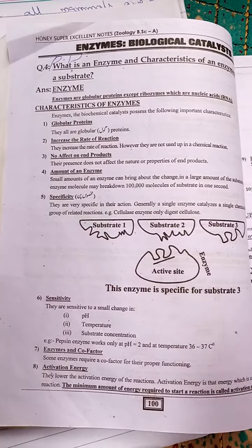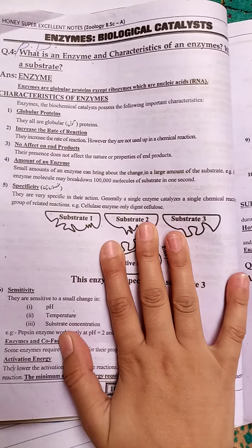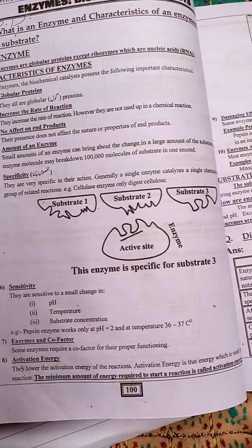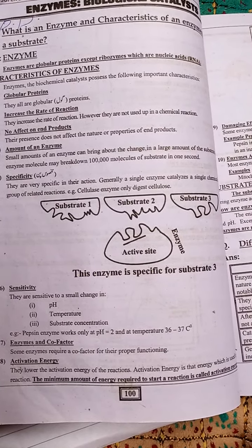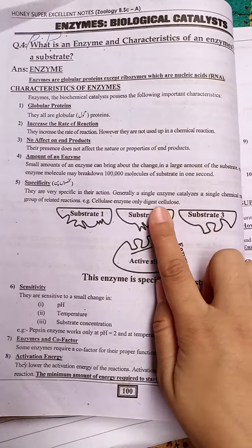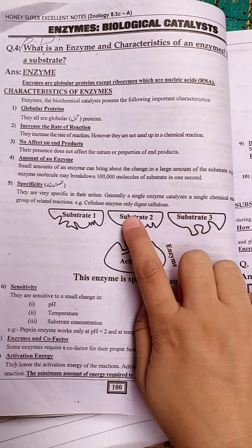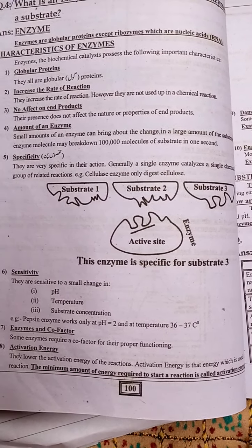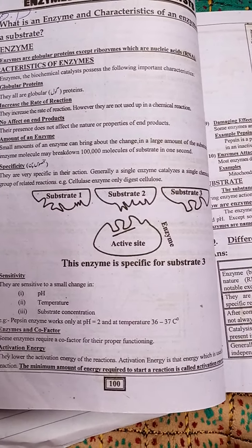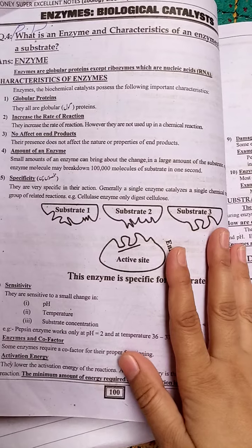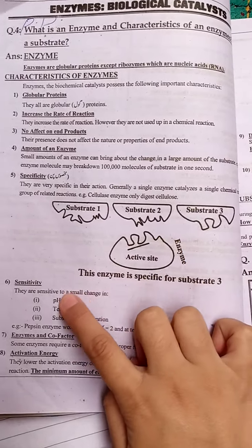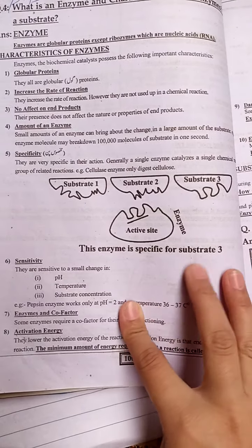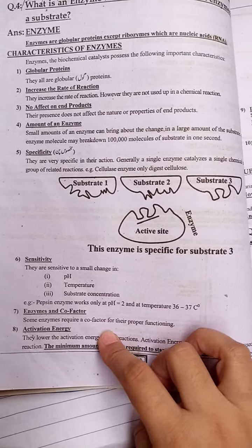Enzymes are highly specific in their reactions — generally, a single enzyme catalyzes one type of reaction only. For example, cellulase enzymes only digest cellulose; they will not perform other functions. Enzymes are also sensitive to changes in pH, temperature, and substrate concentration. For instance, pepsin works only at a pH of 2.